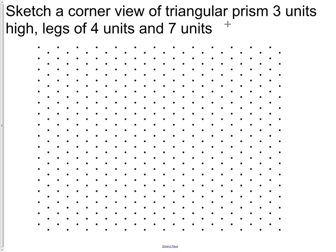Sketch the corner view of a triangular prism that's three units high, legs of four, and seven units. Pause this recording and see if you can do this one without following along with me. Then restart the recording and see if your object looks the same as mine.